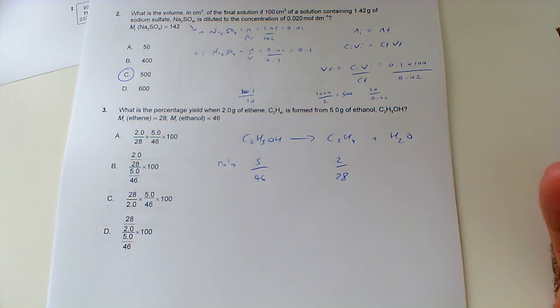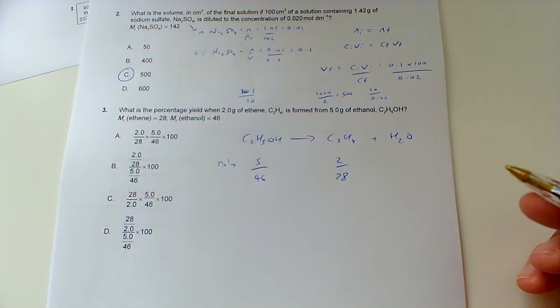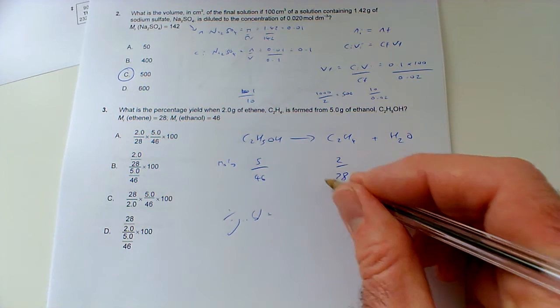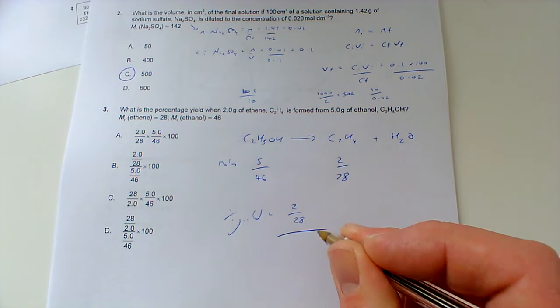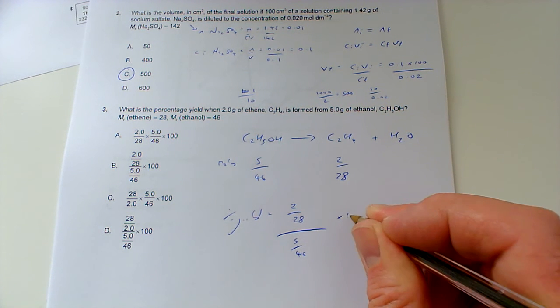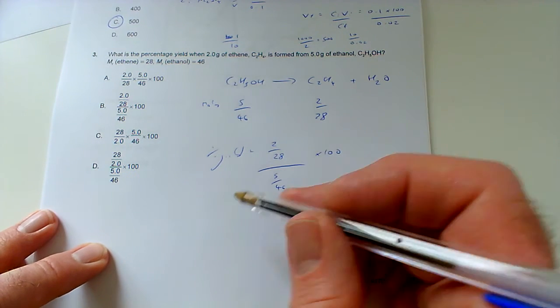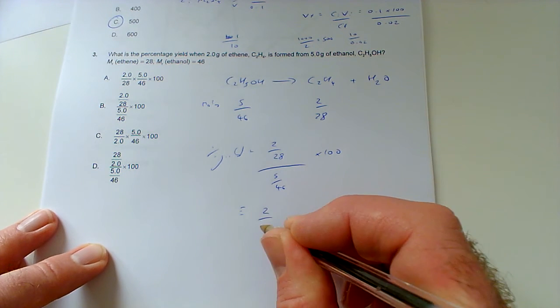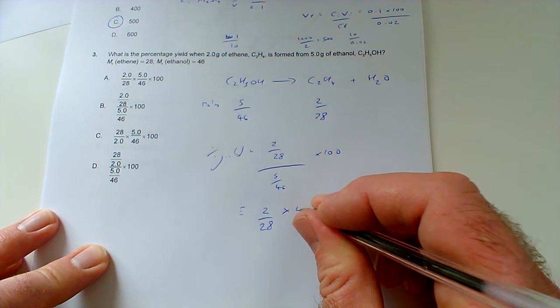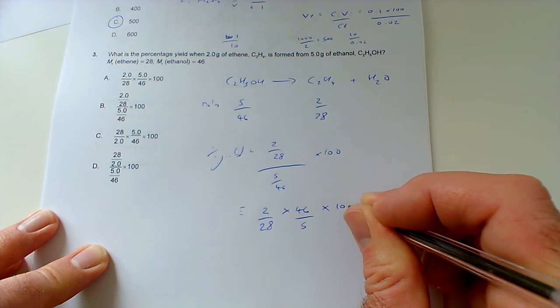Now they react in a 1 to 1 ratio, so 1 mole of this would give you 1 mole of this. So the theoretical number of moles if it was 100% yield would be this, that would be the theoretical number of moles that we could make. So our percentage yield is the amount we got in moles divided by the amount we could have got in moles times 100. Of course one fraction divided by another fraction, and we can simplify that to 2 over 28 times this number inverted, so it would be times 46 over 5 and then times 100.